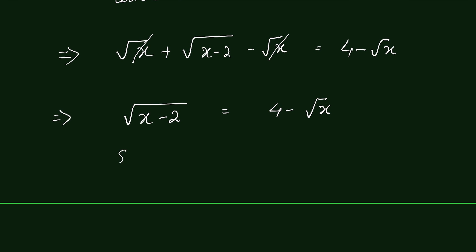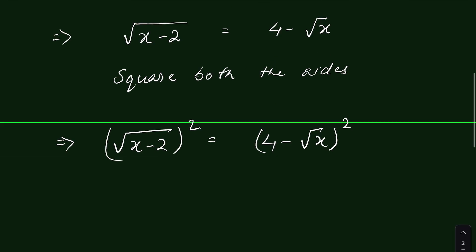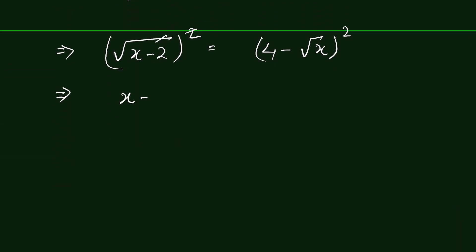Let's square both sides to remove the square root. So squaring both sides: square root of (x minus 2) whole square is equal to (4 minus square root of x) whole square. Removing the square root with the square gives x minus 2 on the left. The right side is in the form of (a minus b) whole square.